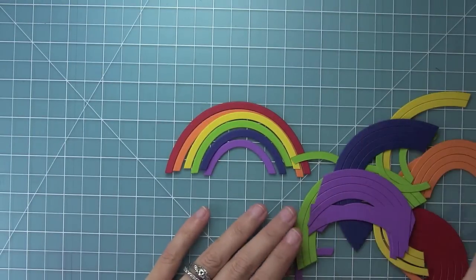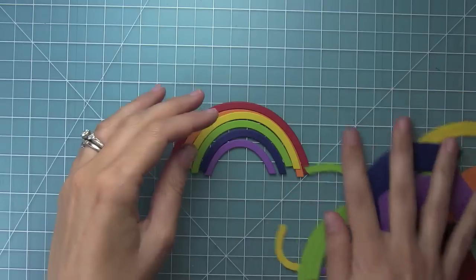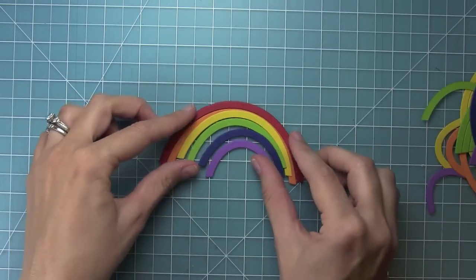Now I've got all my pieces and you can see I kind of cheated once I got down to the smaller pieces. I didn't need to cut as much of the rainbow to get that one little piece.